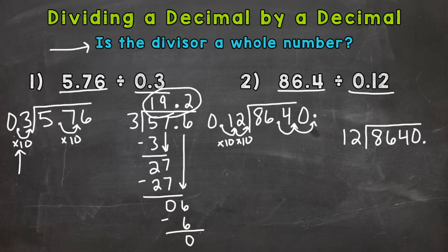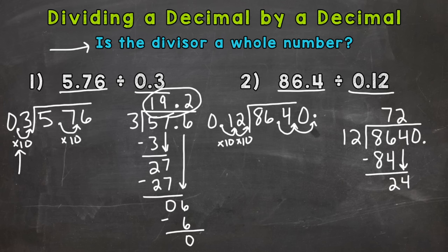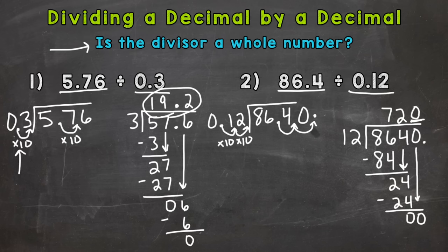Eight divided by 12 — we can't pull any whole groups of 12 out of 8, so we go to 86. Seven times 12 is 84, that's as close as we get. Subtract to get 2, bring down the 4. Twenty-four divided by 12 is 2; two times 12 is 24, subtract to get zero. Do not stop here — we haven't reached the ones place yet. Bring down the 0; zero divided by 12 is 0. Zero times 12 is zero, subtract and get zero. Our final answer is 720.